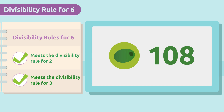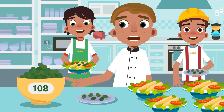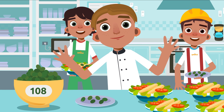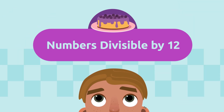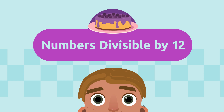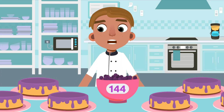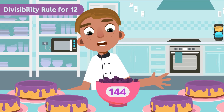That means 108 is also divisible by six! So when we add olives to the salads, each salad will have six delicious olives. Now, for numbers divisible by 12: the restaurant's most famous dishes are 12 blueberry tarts, and there are 144 blueberries.